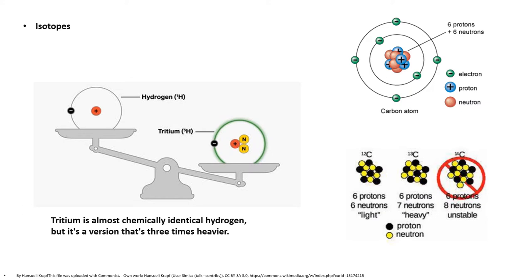Atoms always contain equal numbers of protons and electrons, making them electrically neutral. Each element on the periodic table has a unique chemical identity but can have different weights or isotopes. For example, hydrogen is the smallest atom and is usually made of just one positively charged proton — its shorthand name is H1, specifying its atomic weight. If a chargeless neutron gets added, you get the isotope deuterium or H2. Add two neutrons and you have the isotope tritium or H3. Nuclei from the same element with different numbers of neutrons are called isotopes.